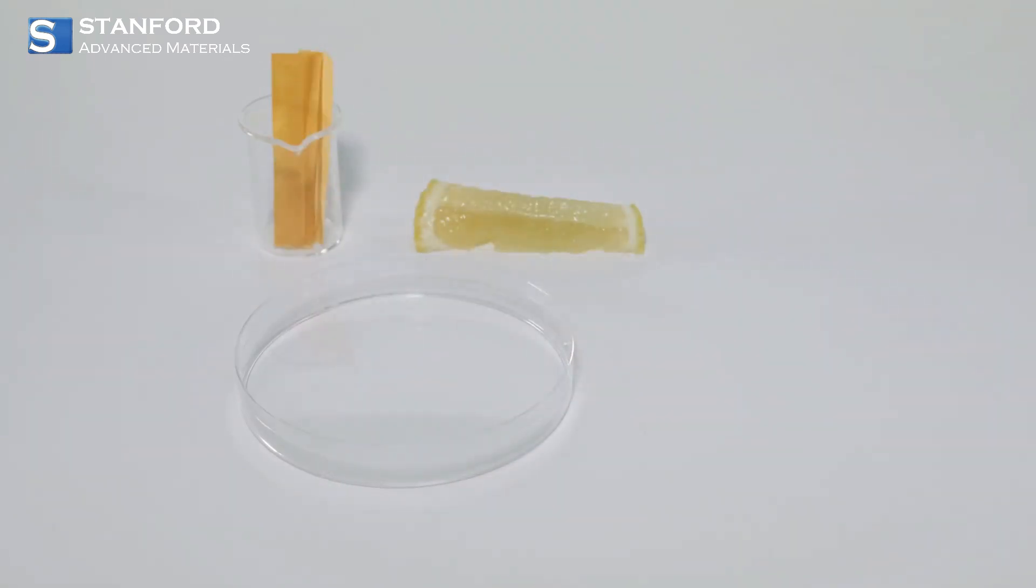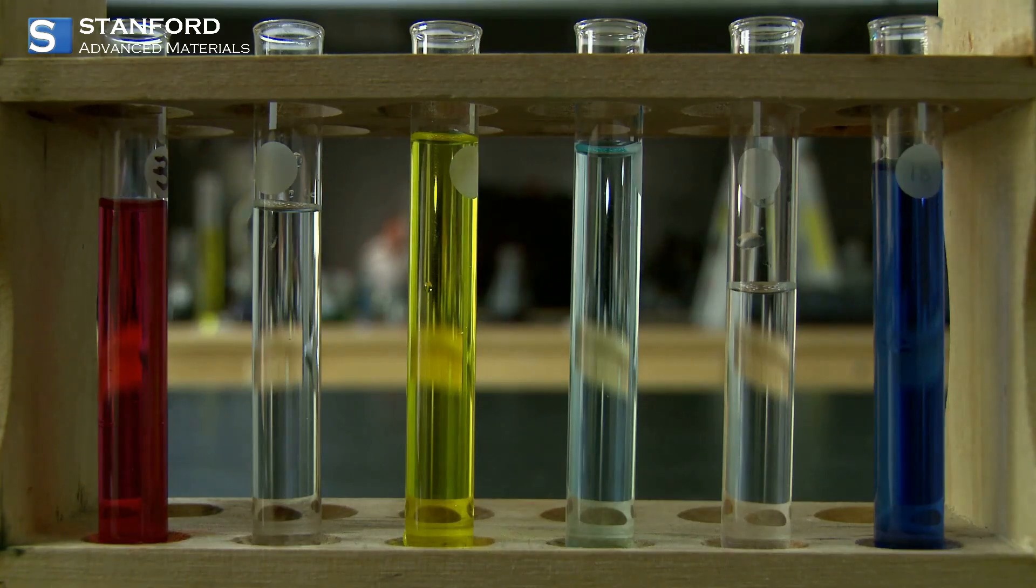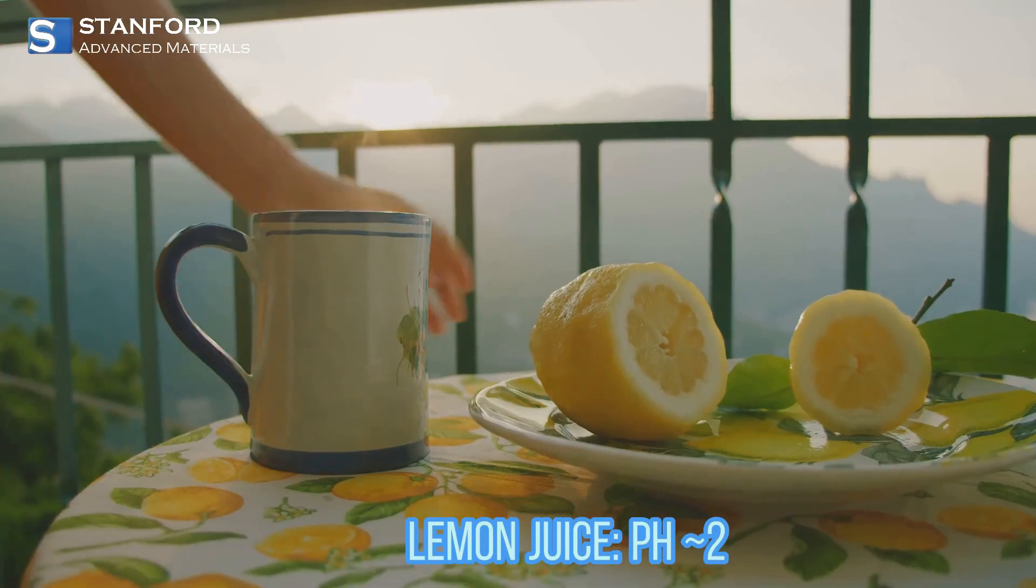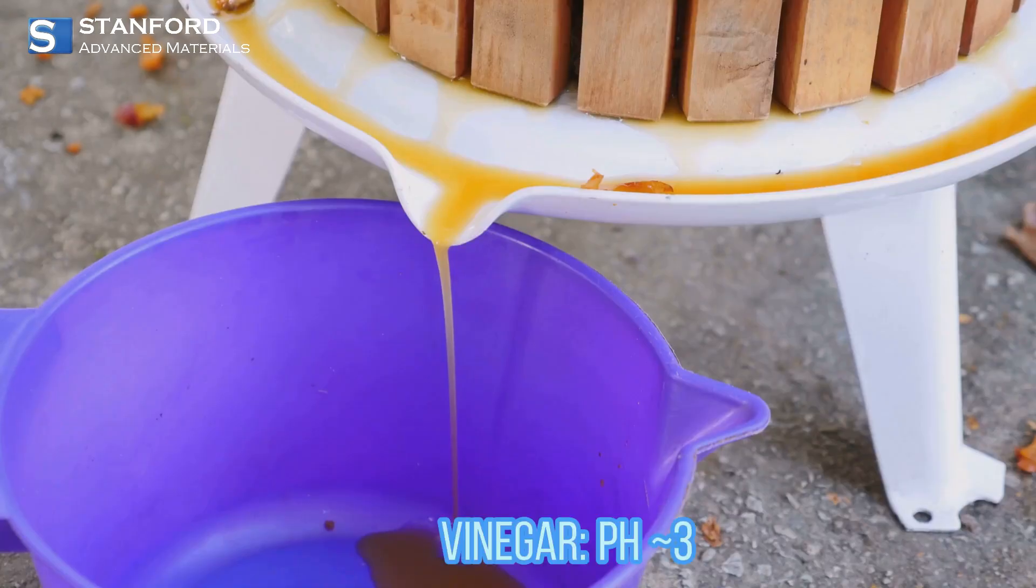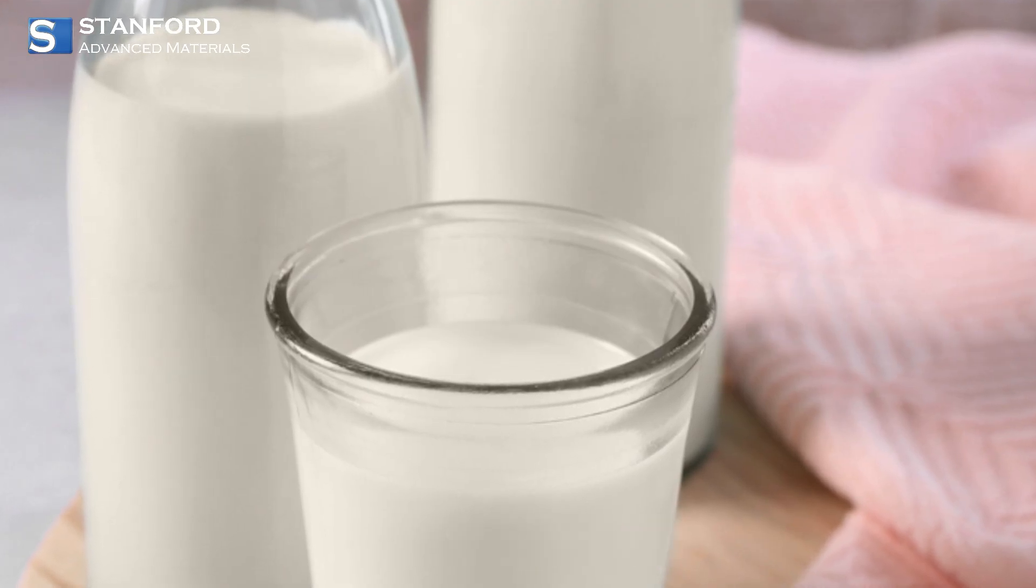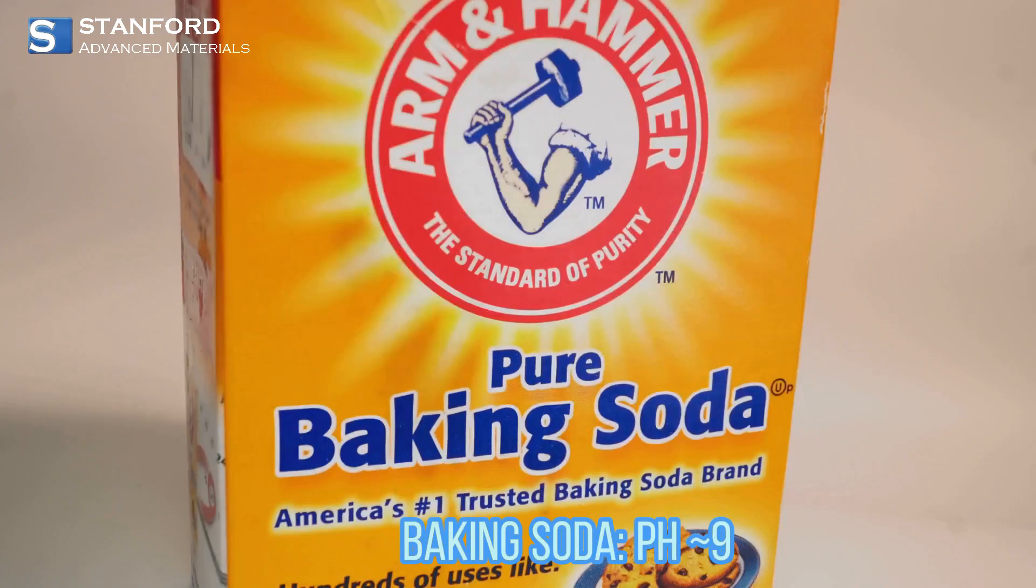Let's place common materials on the scale. Battery acid sits around pH 1, lemon juice about pH 2, vinegar is roughly pH 3, milk lands near pH 6.5, pure water is neutral at pH 7, and baking soda is a mild base about pH 9.